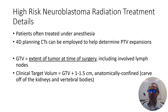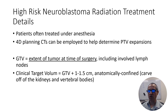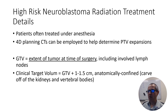When we simulate these patients, we typically treat them under anesthesia because of their young age. We typically do 4D planning CTs so that we can determine the appropriate planning target volume expansions. The gross tumor volume is the extent of tumor at the time of surgery, including involved lymph nodes. The clinical target volume is the GTV plus 1 to 1.5 centimeters, anatomically confined — which in practice means carving it off of the kidneys, perhaps the liver, and the vertebral bodies.